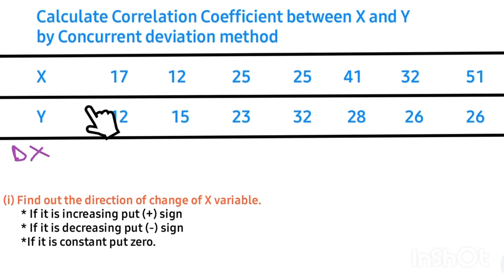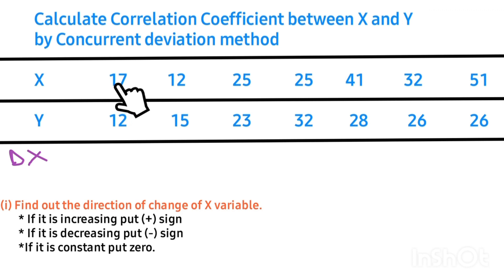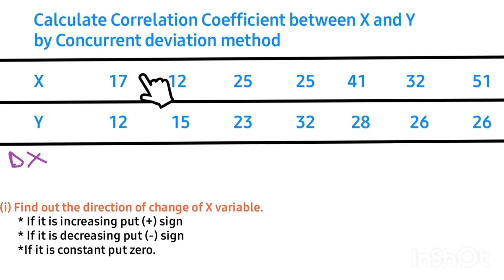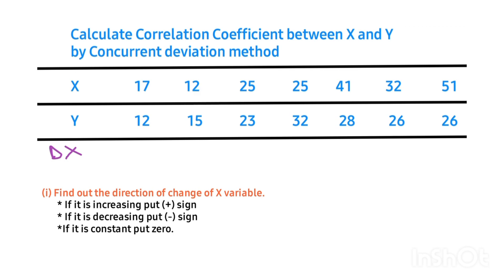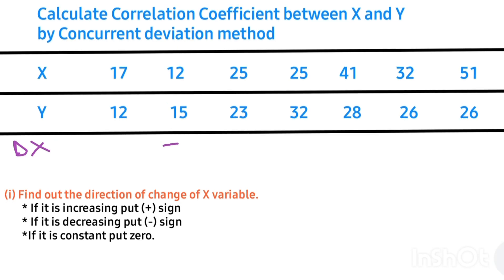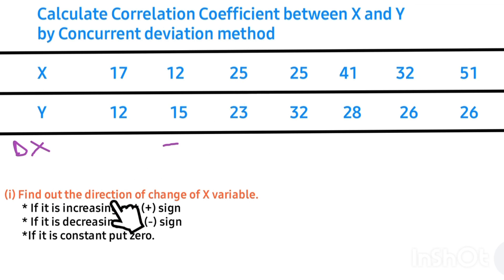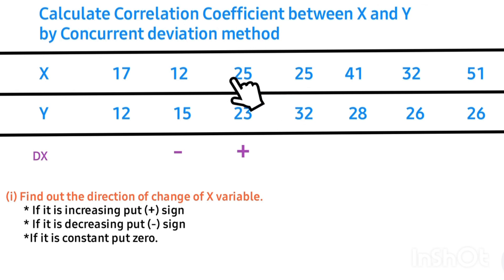Applying Step 1 to the X series: comparing the first value with the second value — 17 is greater than 12, so there is a decrease in value, and we assign a minus sign. Next, comparing 12 and 25 — 25 is greater than 12, meaning there is an increase in value, so we put a plus sign.